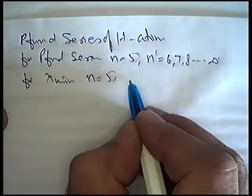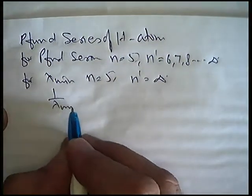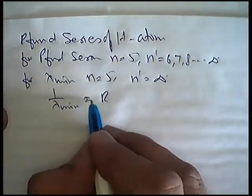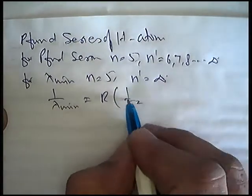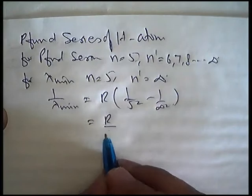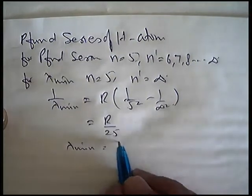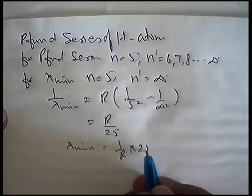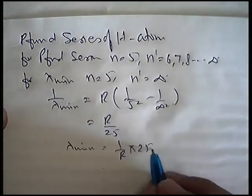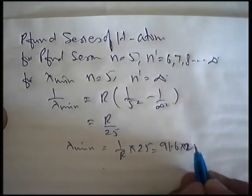N equals 5, n dash equals infinity. So, 1 by lambda minimum equals R, 1 by 5 square minus 1 by infinity square. Yeh bana R by 25. So lambda minimum, 1 by R into 25.